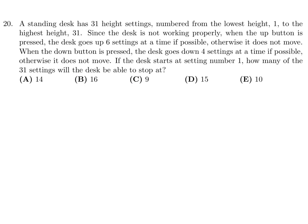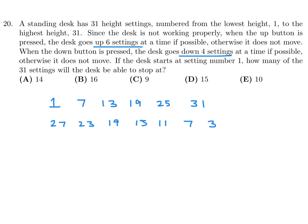A standing desk has 31 height settings numbered 1 to 31. The up button goes up 6 settings if possible; otherwise it doesn't move. The down button goes down 4 settings if possible; otherwise it doesn't move. Starting at setting 1, how many of the 31 settings can the desk reach? Starting at 1 and pressing up: 1, 7, 13, 19, 25, 31. Now at the top, pressing down by 4: 31, 27, 23, 19, 15, 11, 7, 3.